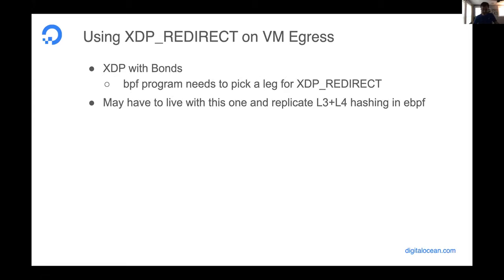The last set of problems involves XDP with bonds. When redirecting a packet, you have to tell it which NIC port — not the bond, because the bond doesn't support XDP. So you're redirecting to either eth0 or eth1. How do you pick that leg? I looked at trying to expose a helper to tap into the bond driver, but L3/L4 hashing on the packet requires an SKB, and replicating that code for XDP is too much overhead. For the past seven to eight months, I've just replicated the bond algorithm in eBPF — maybe this is just something we have to live with as a difference between XDP and full stack.